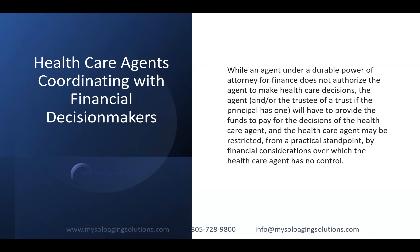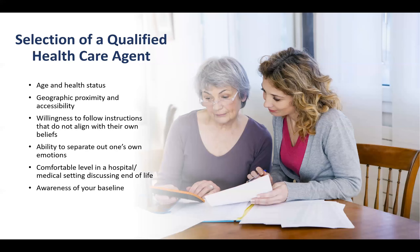I'll now pass this on to Katie to discuss the very practical issues of who to select and other considerations for your healthcare directive. As Ken said, determining who the healthcare agent is going to be is probably the most important part of that document. Most people think it automatically needs to be a spouse or adult child, but several factors come into play.